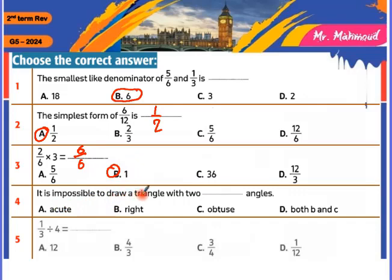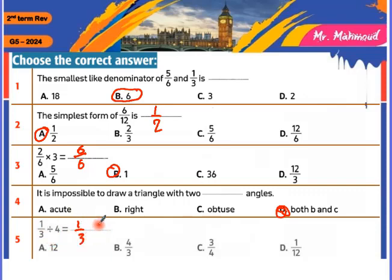It's impossible to draw a triangle with two right angles. Any triangle has at least two acute angles, but if there's one right angle and one obtuse angle, both B and C can't form a triangle — you can't make two right angles or two obtuse angles. For 1 over 3 divided by 1 over 4: change division to multiplication and take the reciprocal, so 1 times 1 over 3 times 4 equals 1 over 12.